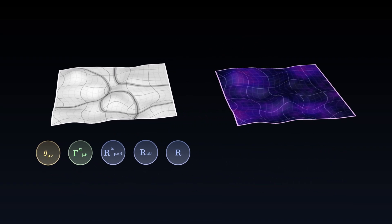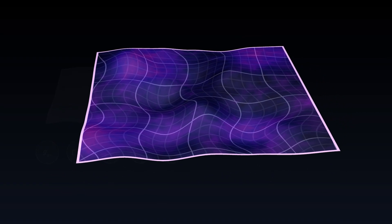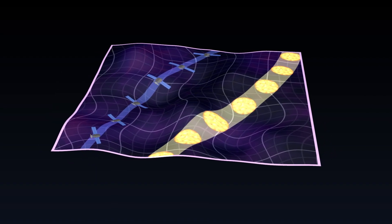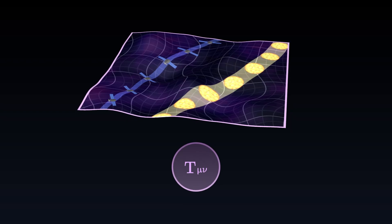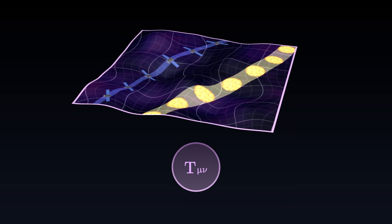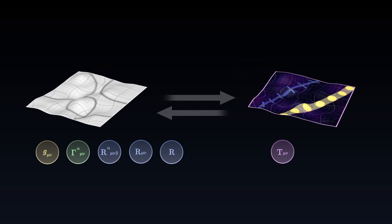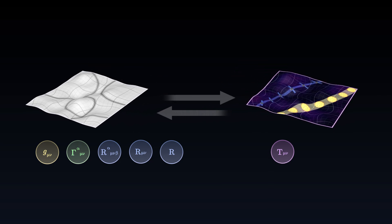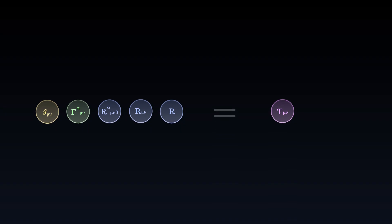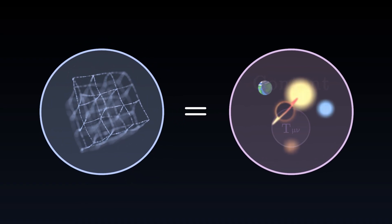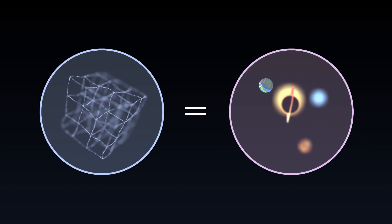On the other hand, we also know how to describe the energy content of the universe, and thus the bodies that it contains along with their motion, using a single tool: the energy-momentum tensor. The most powerful idea in general relativity will be to equate these two notions. Using a single relation, we will write an equality between curvature and content. This equation, which reads as an equality between the geometry and the content of the universe, is called the Einstein equation.